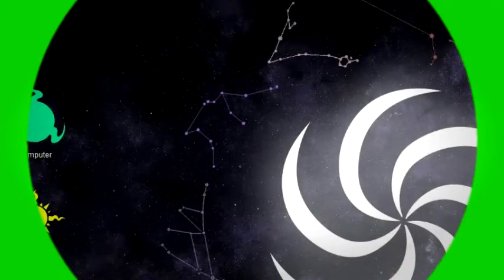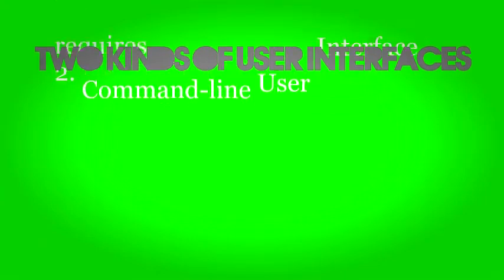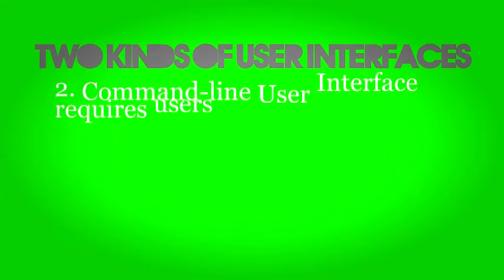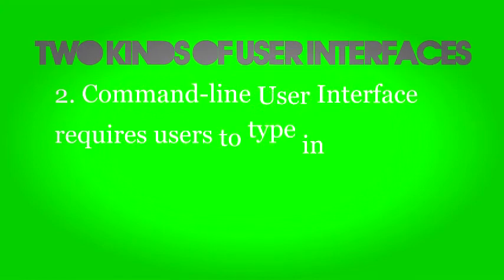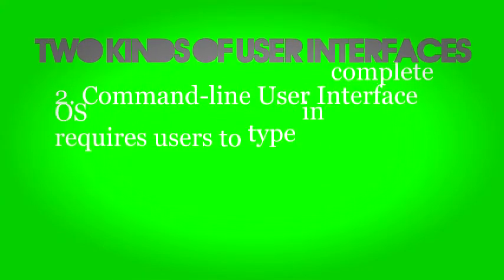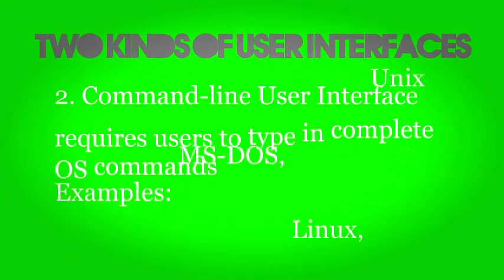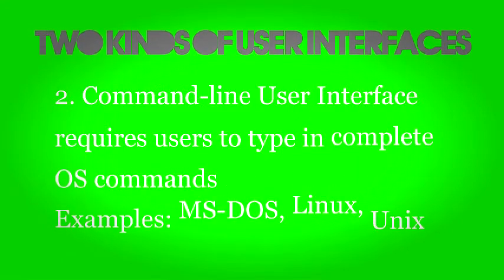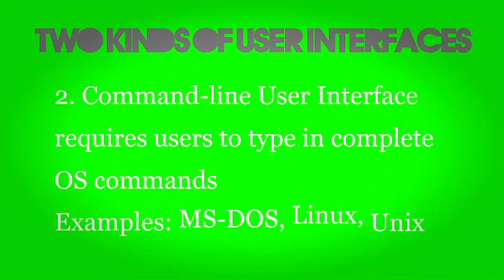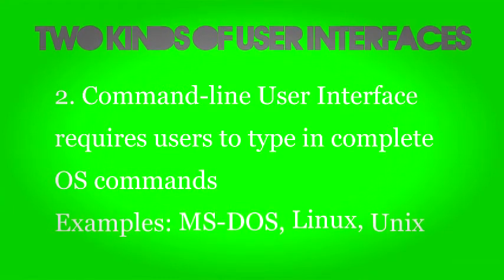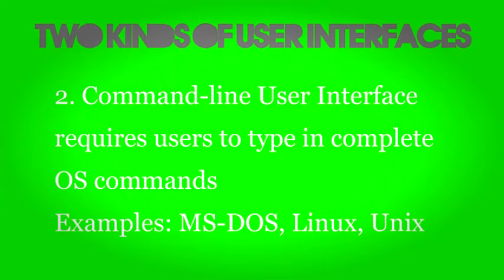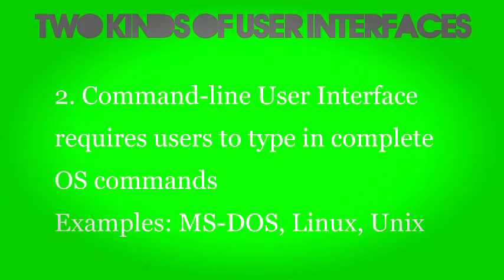On the other hand, the command line user interface, which has been in existence much longer than a GUI, is usually used for large computer operating systems. It's harder to use than a GUI, seeing as you have to type in a number of commands to do what you might have been able to do with a few icon clicks in a GUI. It's not everyone's first choice, but there are still users who prefer it. A main example of a command line user interface is MS-DOS, which will be discussed later.